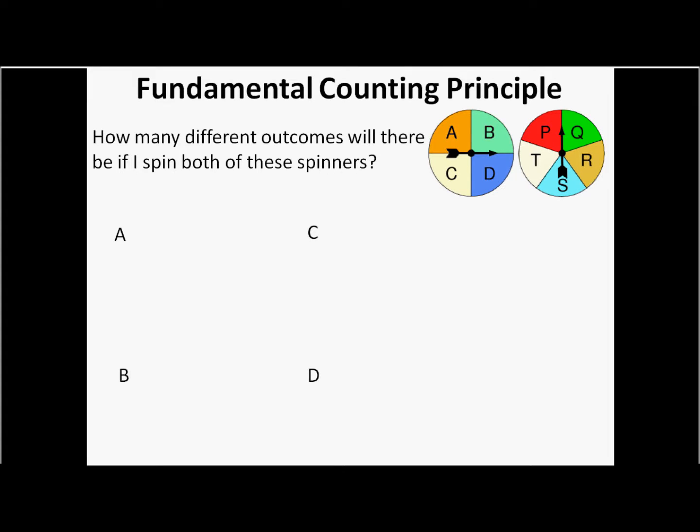So we've spun the first spinner and we've listed our different possibilities. Now we're going to look at the different possibilities off of the next spinner. Well, if we spin and land on A, there's five different results that could happen when spinning the second spinner. You could get a P, a Q, an R, an S, and a T. So those are the first five outcomes. You could have AP, AQ, AR, AS, and AT.